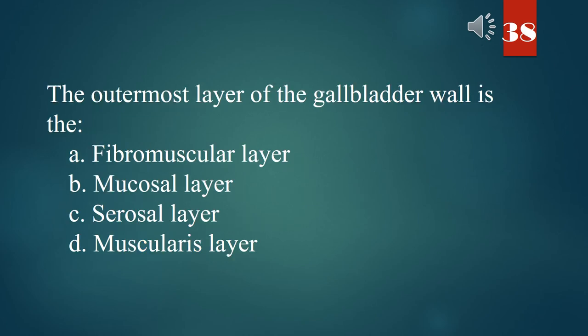The outermost layer of the gallbladder wall is the: A. Fibromuscular layer. B. Mucosal layer. C. Serosal layer. D. Muscularis layer. The answer is C. Serosal layer.